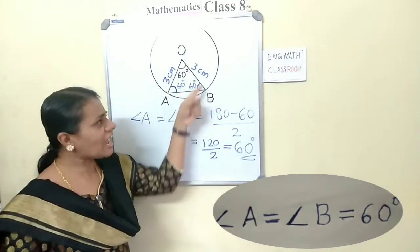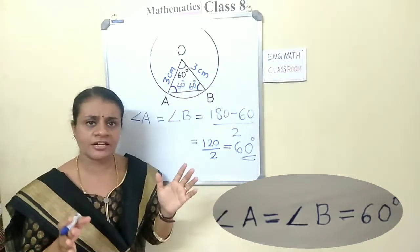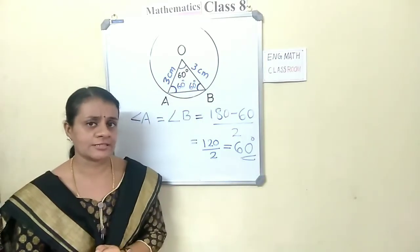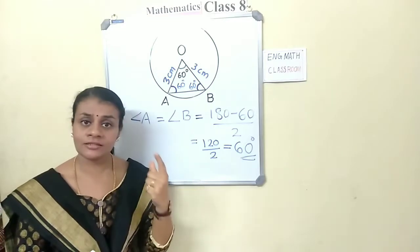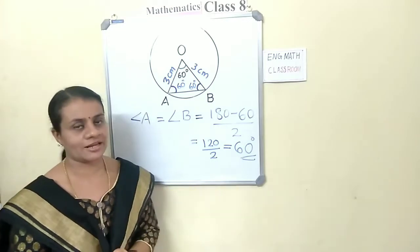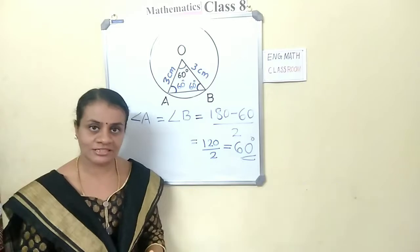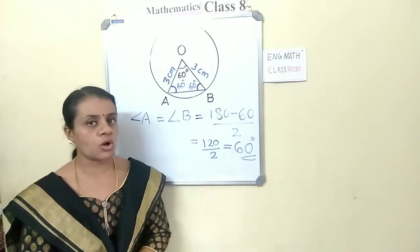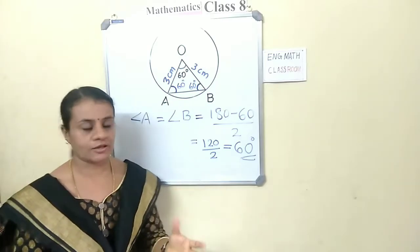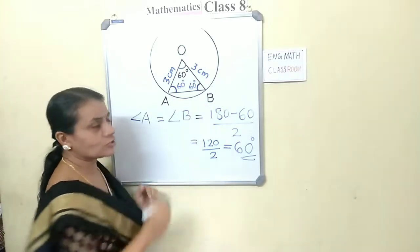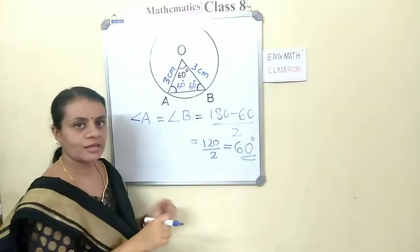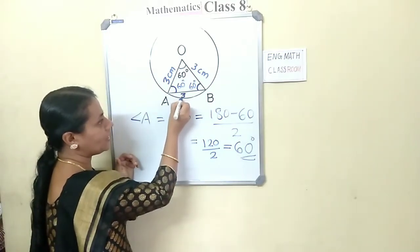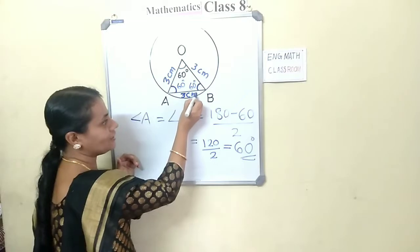If all 3 angles of a triangle are equal, what type of triangle is it? It is an equilateral triangle. In an equilateral triangle, all sides are equal and all angles are equal. So AB is also 3 cm in length. We can write AB is 3 cm.